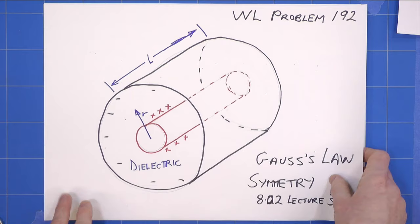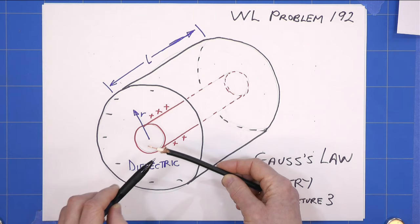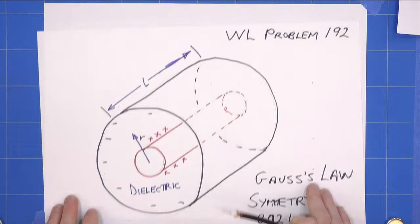What we have is an inner conductor, an outer braid which is the copper you can see here, and we have a dielectric between them. So dielectric, inner, and outer.